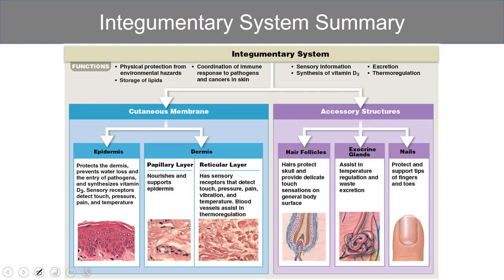Here we have a diagrammatic breakdown that includes a list of those functions. The integumentary system consists of the cutaneous membrane and the accessory structures. The cutaneous membrane is further divided into the epidermis and dermis, and under accessory structures we have hair, glands, and nails.